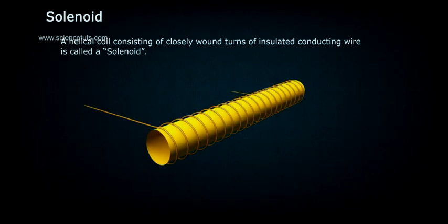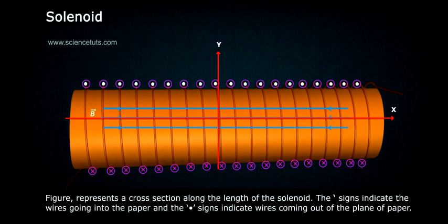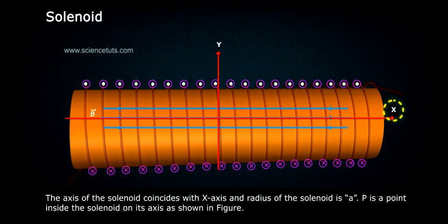Solenoid: A helical coil consisting of closely wound turns of insulated conducting wire is called a solenoid. The figure represents a cross section along the length of the solenoid. The apostrophe signs indicate the wires going into the paper and the dot signs indicate wires coming out of the plane of paper.